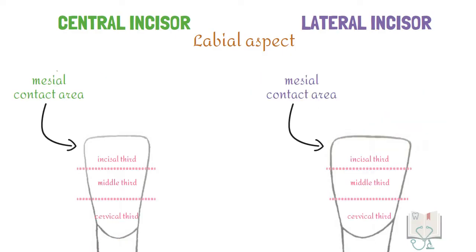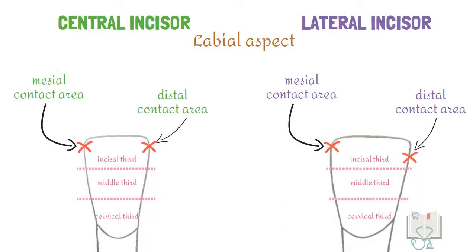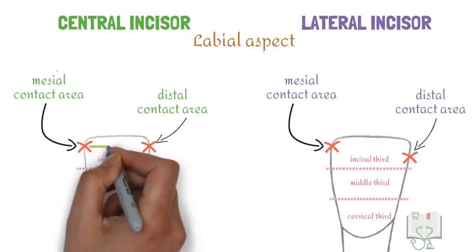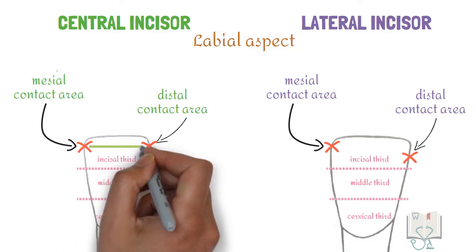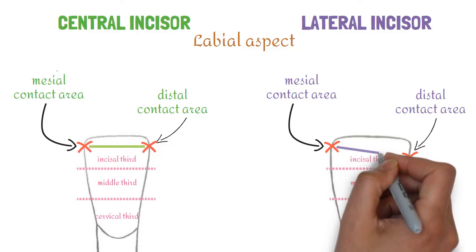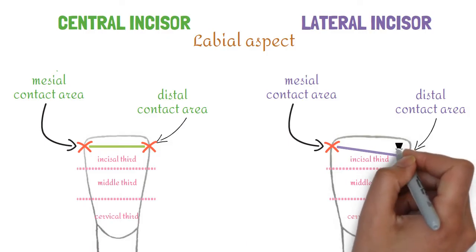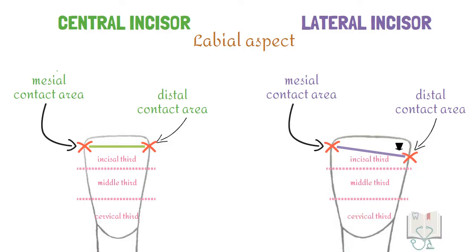Coming to the contact areas, both the mesial and distal contact areas of both incisors are in the incisal third. However, in the central incisor, both contact areas are at the same level, but in the lateral incisor, both contact areas are not at the same level as the distal contact area is slightly cervically placed.